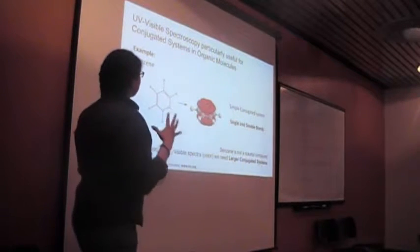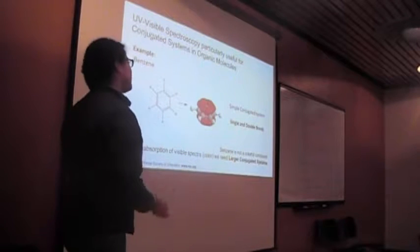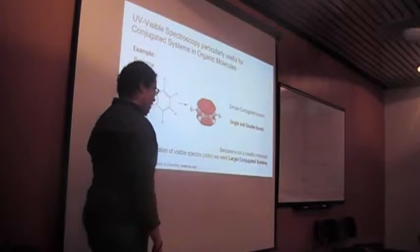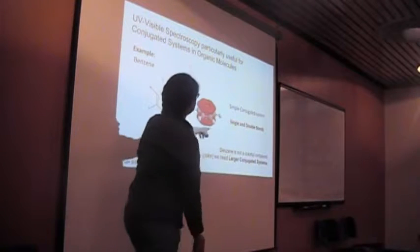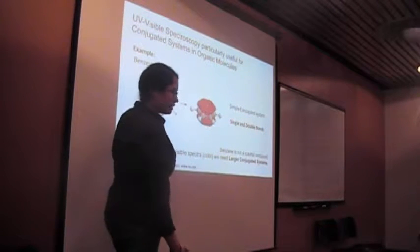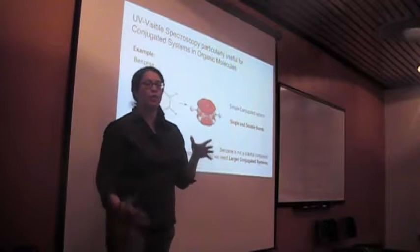UV-visible spectroscopy is particularly useful for conjugated systems in organic molecules. The easiest conjugated system is the benzene ring, and it is a combination of single and double bonds, as we can see here. However, benzene is not a colorful compound.